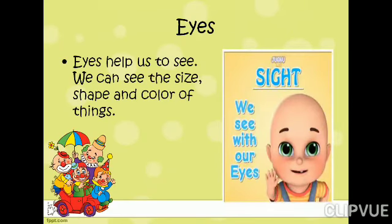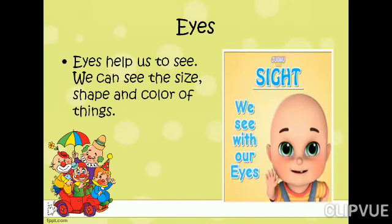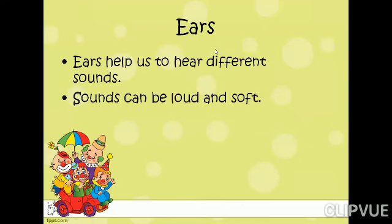Then next, eyes. Eyes help us to see. We can see the shape and color of a thing. You are watching this video — you are using your eyes to watch this video and your ears to hear my voice. You can also see pictures and different types of words with the help of your eyes.